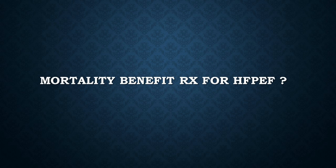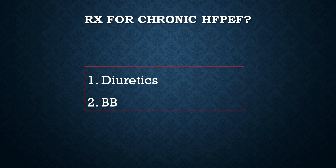Question: What is the mortality benefit treatment for heart failure with preserved ejection fraction? This was a tricky question because there is no mortality benefit treatment for this type of heart failure. You can treat the patient with beta blockers and diuretics, but no mortality benefit has been proven. What we want to do is manage the underlying hypertension — the most common cause of diastolic failure — and treat the symptoms as they occur.